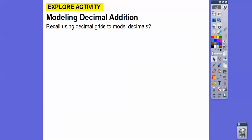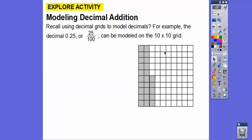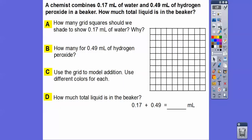Recall using decimals to model decimal grids. Do you recall doing decimal grids? So for example, 0.25, which ends in the hundredths spot, so 25 hundredths, can be modeled on a 10x10 grid. Here's a 10x10 grid — here's 10 of them, here's 20 of them, and then 5 more. So here's 25 hundredths — out of the 100 squares, there's 25 of them shaded. We're going to be using that for the first few parts to talk about hundredths and adding decimals.